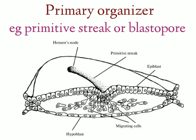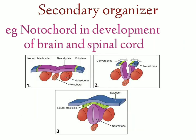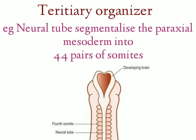The primary organizer is the primitive streak. It is the primary organizer for the differentiation of the notochord and the intraembryonic mesoderm. This notochord again acts as the secondary organizer in the development of the brain and the spinal cord. The tertiary organizer is the neural tube in the segmentalization of the paraxial mesoderm into the somites.